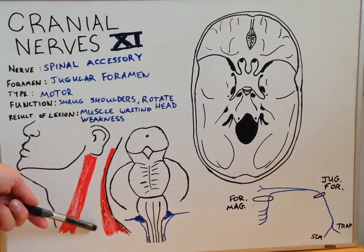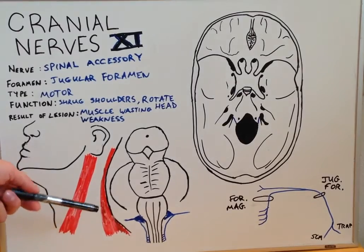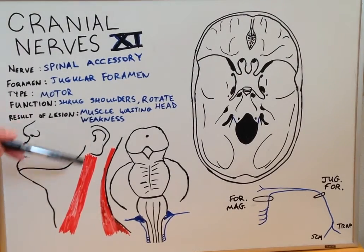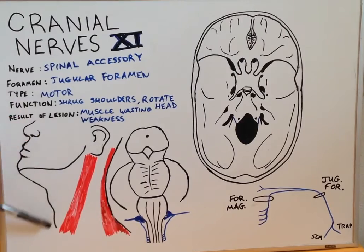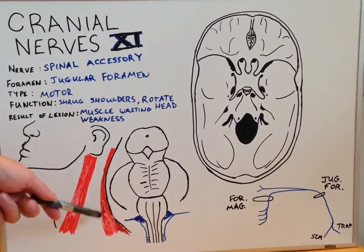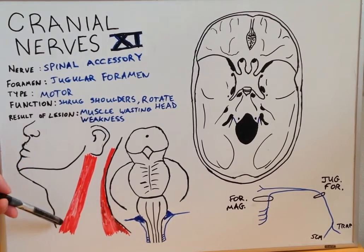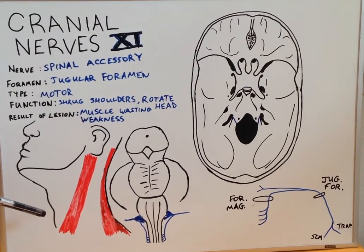To test the trapezius muscle, you can simply ask the patient to shrug their shoulders. And to test the sternocleidomastoid, you can simply ask the patient to rotate their head. You might even see muscle wasting along with the weakness, a drooping of the shoulders with trapezius wasting, and an unevenness in the neck with sternocleidomastoid muscle wasting. And this is cranial nerve number 11.